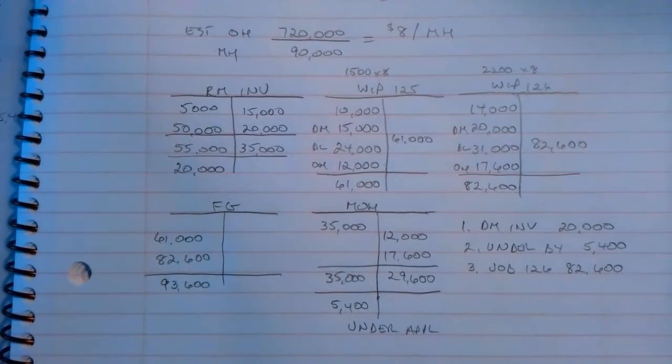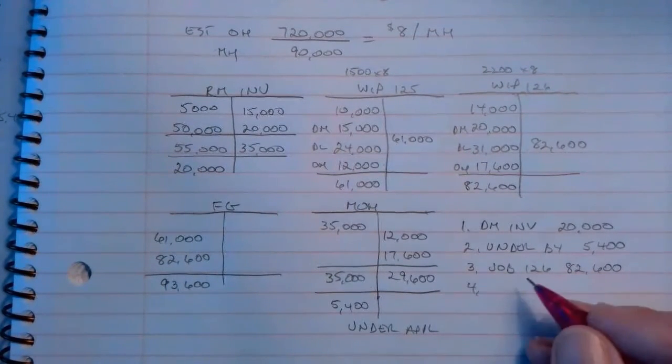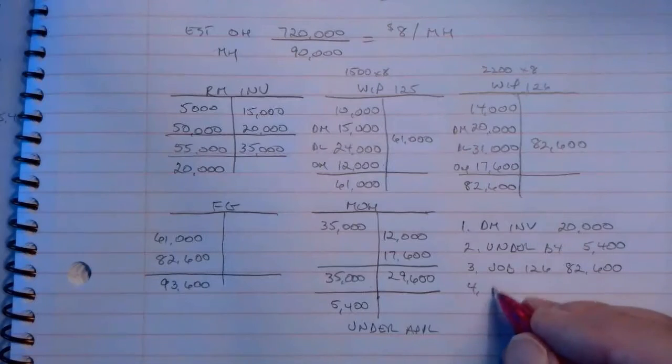So that would be our cost of goods manufactured for number 4—$93,600.